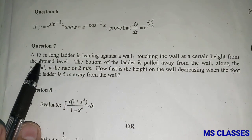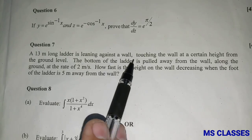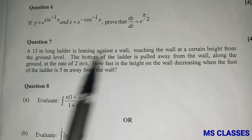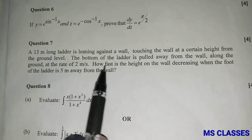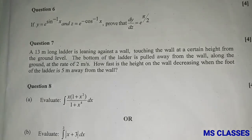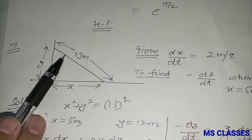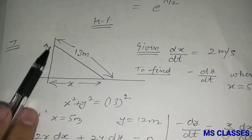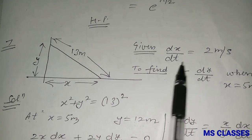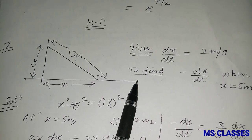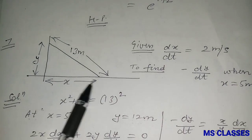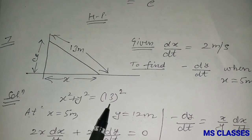Question 7: A 13-metre long ladder leans against a wall. The bottom is pulled away at 2 m/s. How fast is the height decreasing when the foot is 5 m from the wall? Let the height be y and base be x, so dx/dt = 2 m/s. From Pythagoras: x² + y² = 13². At x = 5, y = 12.